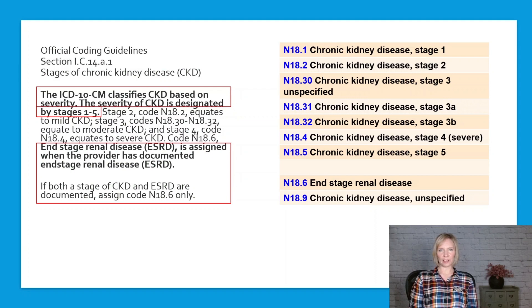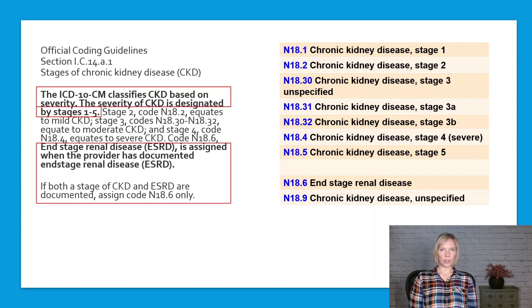ICD-10 classifies chronic kidney disease according to its severity. CKD has five stages and there are seven ICD-10 codes to identify them. These stages are Stage 1, Stage 2, Stage 3 — which is subdivided into Stage 3A and Stage 3B — Stage 4, and Stage 5.